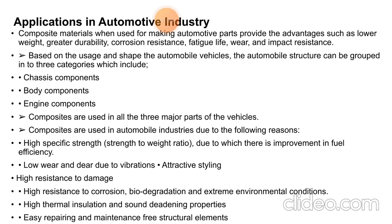Composite materials when used in making automotive parts provide advantages such as lower weight, greater durability, corrosion resistance, fatigue life, and wear and impact resistance. Based on the use and shape, the automobile structure can be grouped into three categories: chassis components, body components, and engine components.